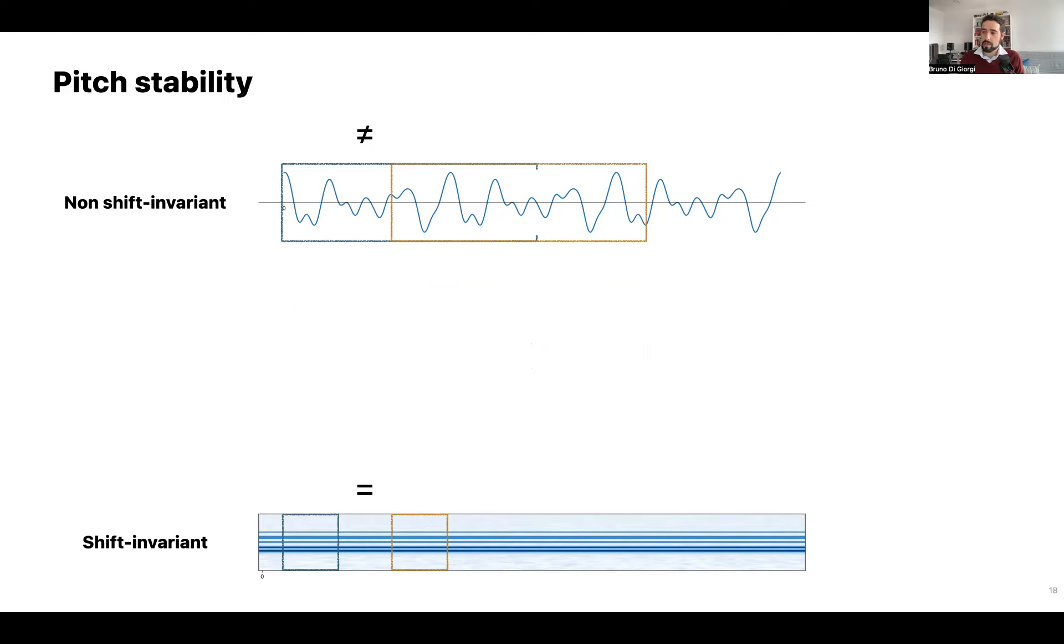One more thing that's important to note at this point is that the input space, the Mel spectrogram, is shift invariant for long sustained notes like this, while the output target space, the time domain waveform, is non-shift invariant. What I mean by that is that if you move your window over time, signal doesn't change for the Mel spectrogram, while it of course changes for the time domain waveform, except of course if you're shifting of exactly one or a whole number of periods. This is particularly important because it's very hard for a stateless model like a convolutional neural network to be able to recover the non-shift invariant domain from a shift invariant domain.